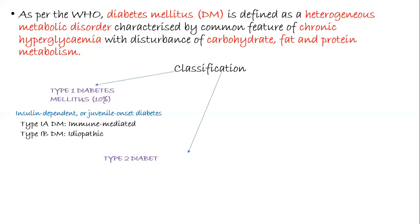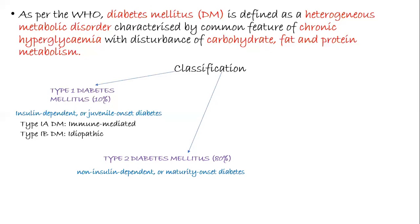The second type is type 2 diabetes mellitus, comprising about 80% of cases. It was previously termed non-insulin dependent or maturity-onset diabetes, as it was thought to be induced after the age of 45 years. But now we know that is not always the case, and insulin can also be used as treatment. Both older terms are now considered obsolete.